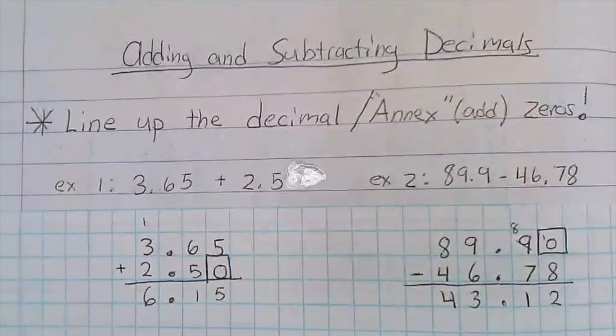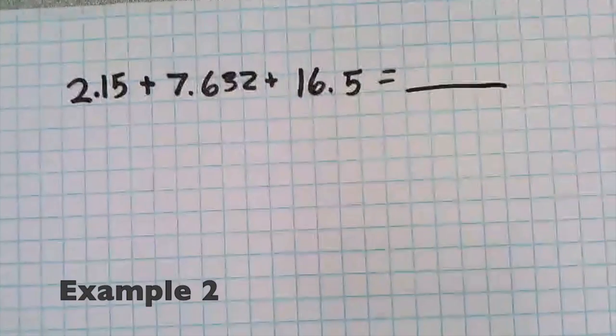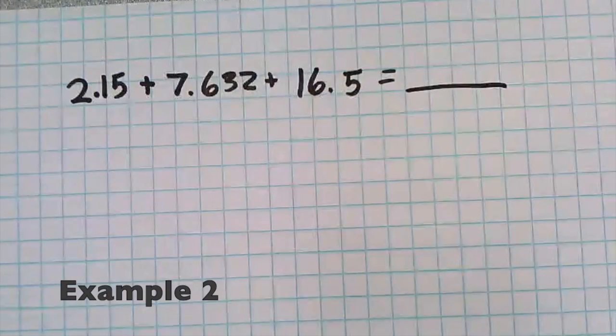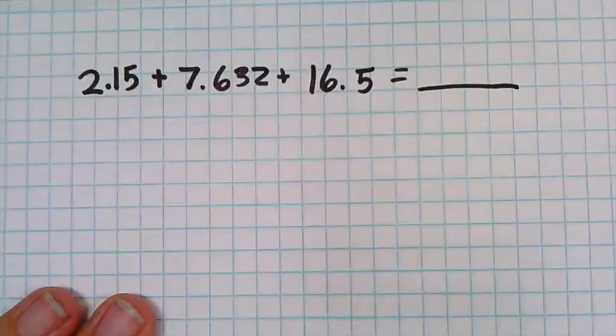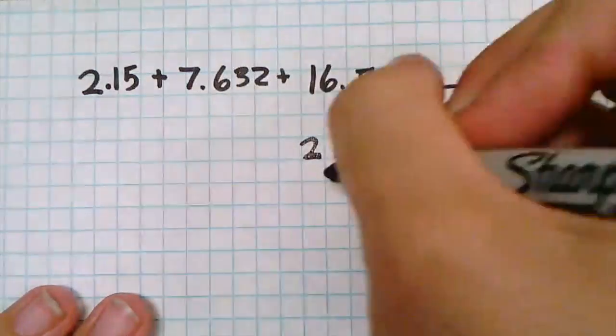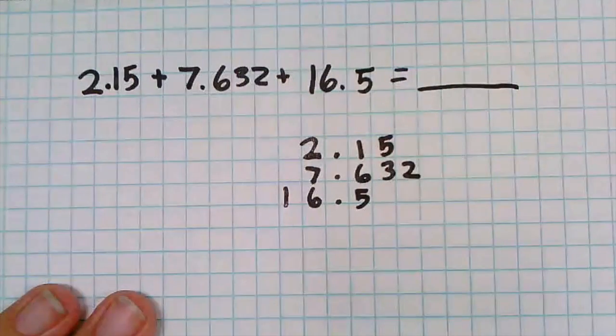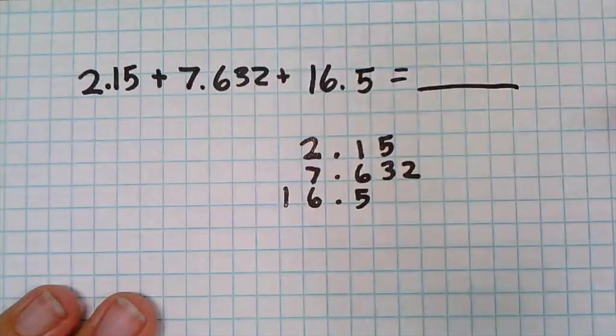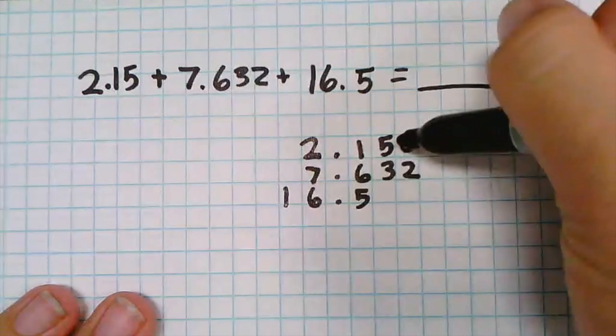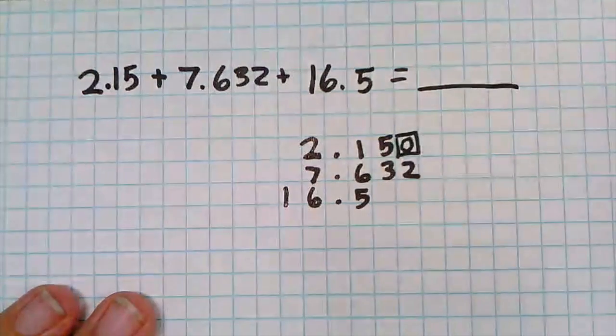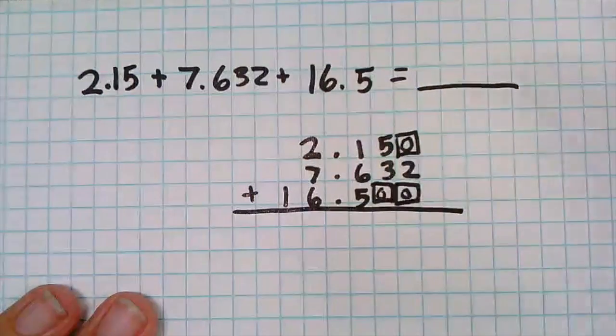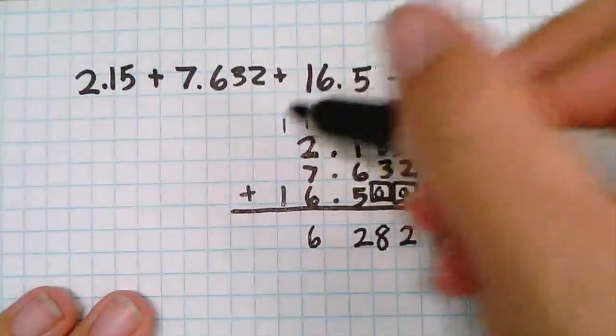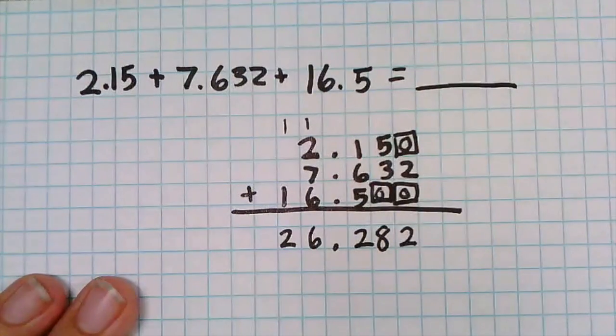Let's look at another one of how to set it up. So here's example number two. In this case I'm adding up three numbers. I'm gonna rewrite them vertically and I'm gonna make sure that I line up my decimal place. So the next step is to annex zeros so there's the same amount of decimal places. I'm gonna add one zero here and I'm gonna box it off to show what I'm doing, and I'm gonna add two zeros here. Now I'm ready to add, and there's our answer: 26.282.